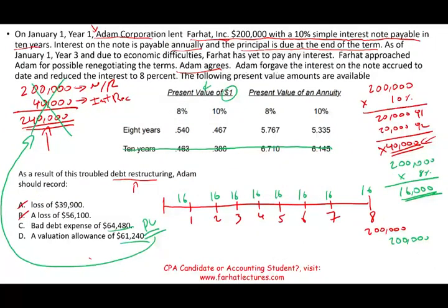Here's the key trick: do I use 8% or 10% as the discount rate? As the investor — Adam — I lent my money wanting to earn 10%. I still want to earn 10%, even though I'm losing. So when I discount both the principal and the interest payments, I use 10%. Therefore, I multiply the $200,000 by 0.467, giving me $93,400 — the present value of the principal.